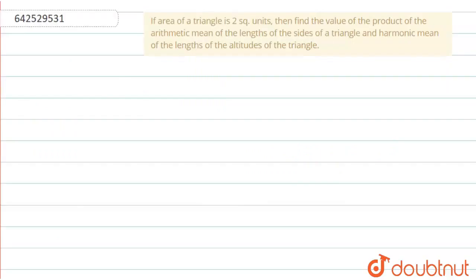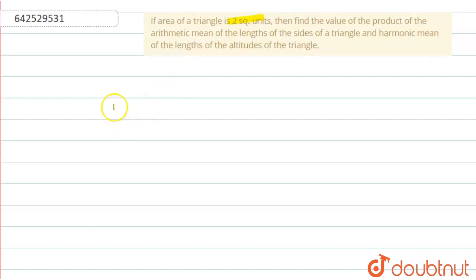Hello students, the question given here is: if the area of a triangle is 2 square units, then find the value of the product of the arithmetic mean of the length of the sides of a triangle and the harmonic mean of the length of the altitudes of the triangle.